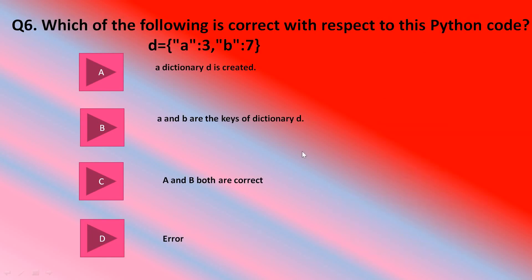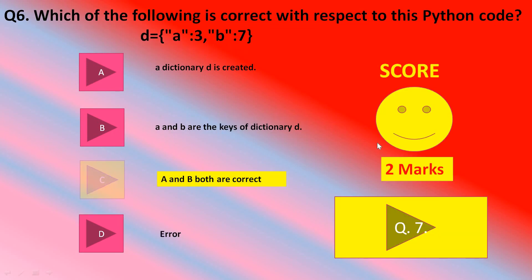Let's move to question number 6. Which of the following is correct with respect to this Python code: D equals A colon 3, B colon 7. A key-value pair. A dictionary D is created. A and B are the keys of the dictionary D. A and B both are correct. Or an error. Let me try C. Both options are correct. The dictionary will be created and A and B are the two keys of dictionary D. This question also has two marks. Judge yourself.